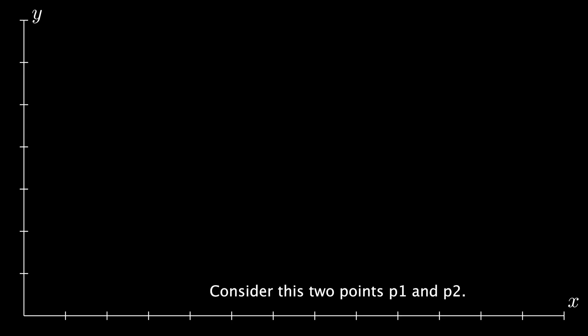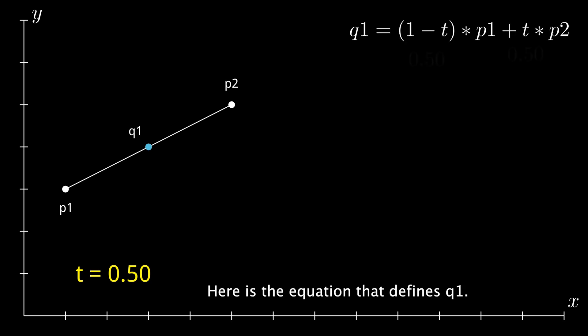Consider this. Two points, P1 and P2. Let's connect them using a straight line and now let's put another point on this line called Q1. Q1 is a combination of P1 and P2. Here is the equation that defines Q1. Now, there is no need to get overwhelmed by it.